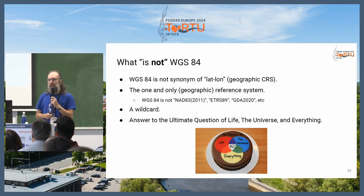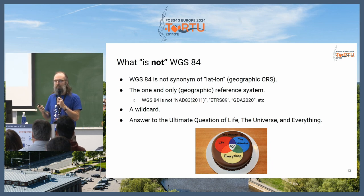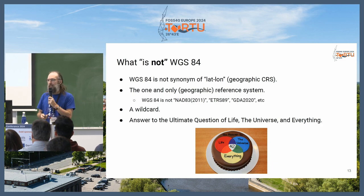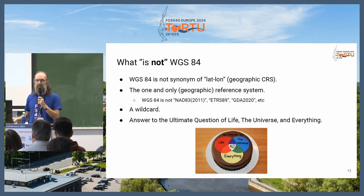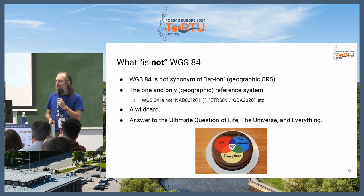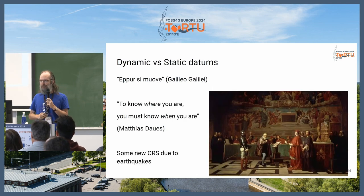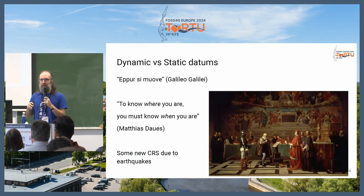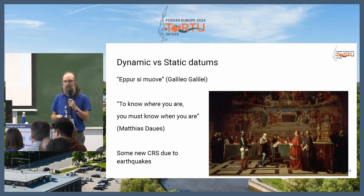What is WGS84 not? It's not a synonym of latitude-longitude as a geographic reference system. Many people, unfortunately, are using WGS84 when they want to say latitude-longitude. It's not the one and only geographic reference system. There are many others — like NAD83 2011 in the US, ETRS89 in Europe, GDA2020 in Australia. It's not a wildcard you can use wherever you want. Maybe it's the answer to the ultimate question of life, the universe, and everything.